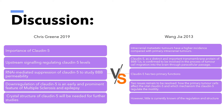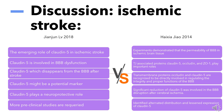Claudin-5 has been confirmed to be involved in the process of tumor formation. A concordance between the articles is that two issues remain to be resolved: how the primary tumor cells affect claudin-5, and by which mechanism claudin-5 regulates motility. Another concordance is that little is currently known about the regulation and structure of this protein. One of the reviewed articles elaborates the emerging role of claudin-5 in ischemic stroke.